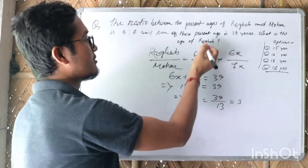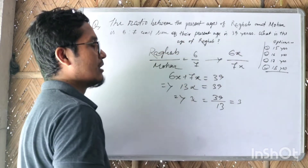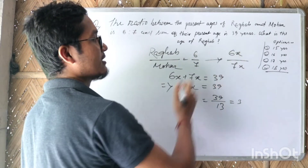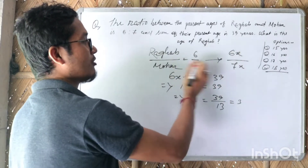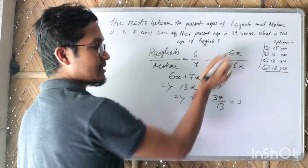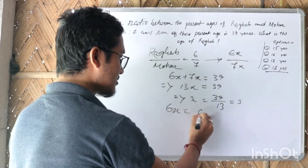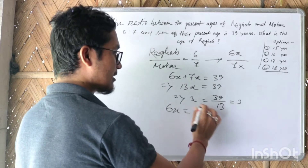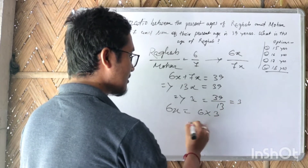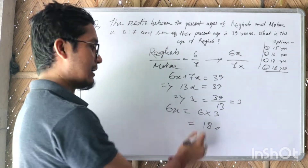So what is the age of Raghav? Raghav's age equals 6x. So 6x equals 6 multiplied by x, and the value of x is 3, giving us 18. So Raghav's age is 18 years.